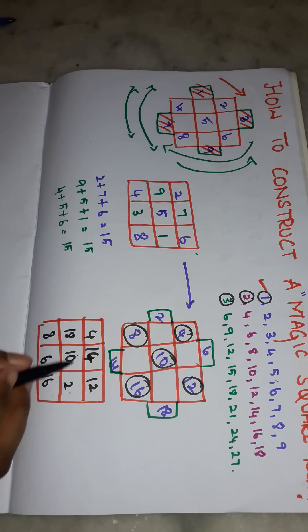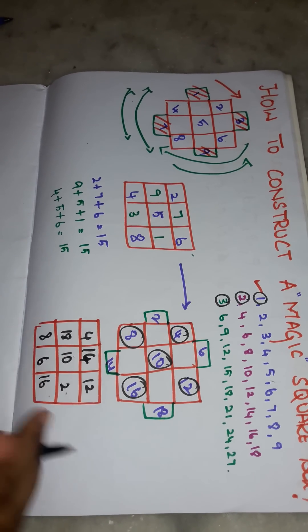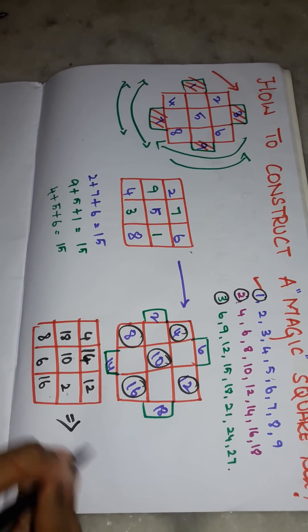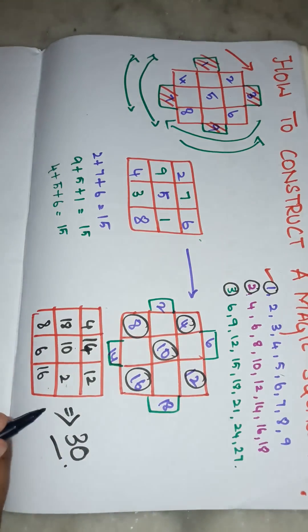If you have added, add the square boxes in any direction, the answer will be a same number, 30.